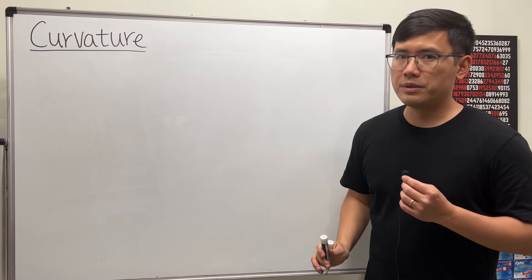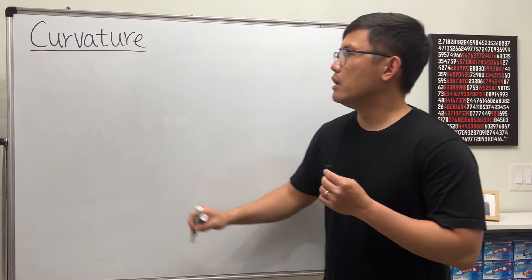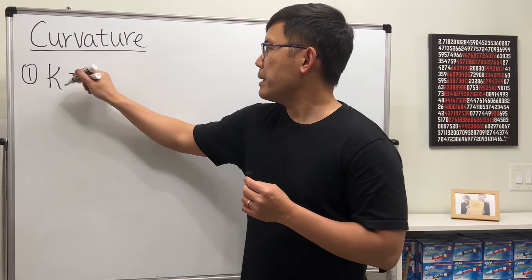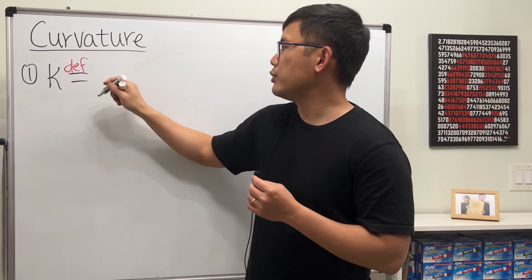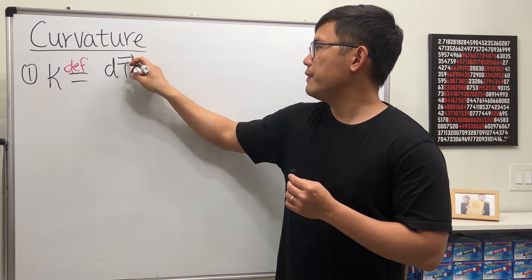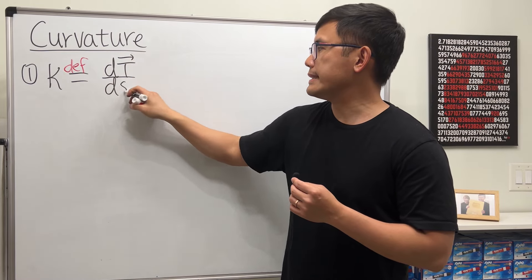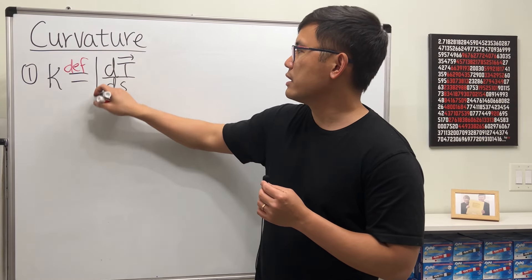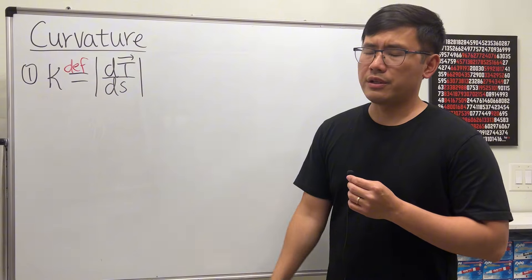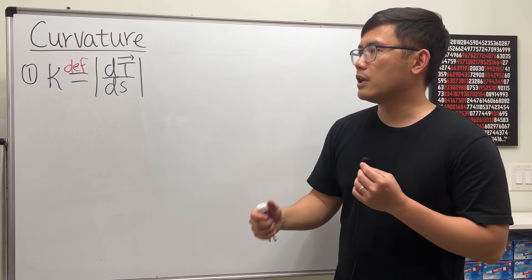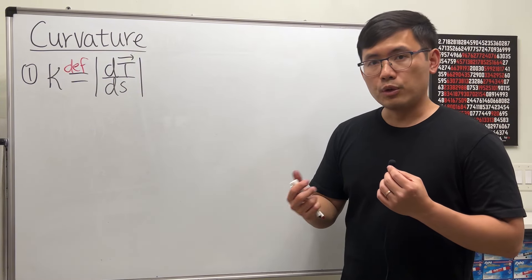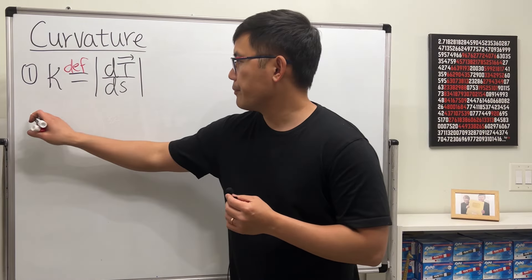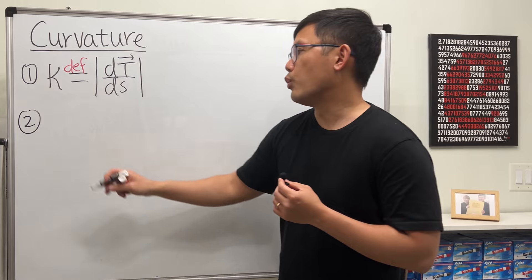Here is a summary of all the formulas for curvature. First, we begin with the definition: kappa, the curvature, is defined as the derivative of the unit tangent vector with respect to arc length s, and then we take the magnitude of this. As we can see, this is not so useful because when we are given a function, most of the time it is in terms of t, so we use the computational formulas.